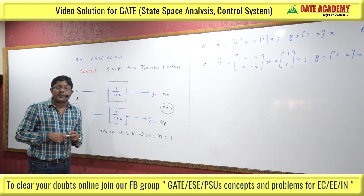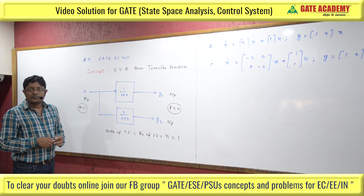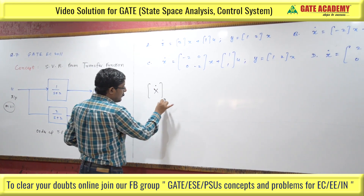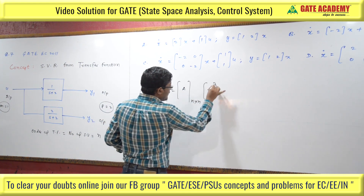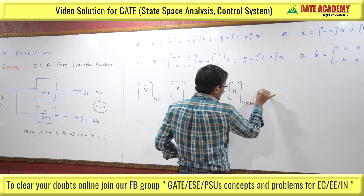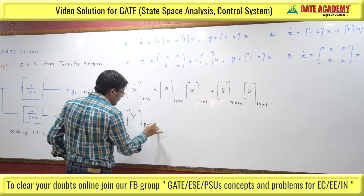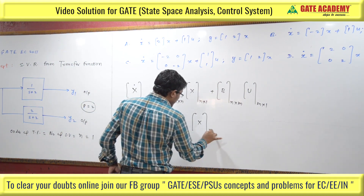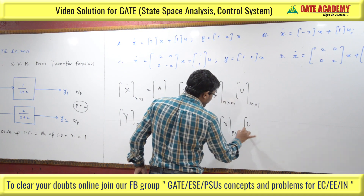As I provided in the first video on introduction to state space analysis, P represents the number of outputs, M represents the number of inputs, and N represents the number of state variables. The state equation is: X-dot (N×1) = A (N×N) · X (N×1) + B (N×M) · U (M×1). The output equation is: Y (P×1) = C (P×N) · X (N×1) + D (P×M) · U (M×1).